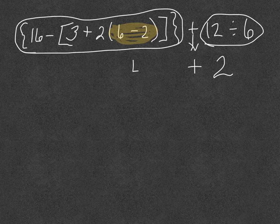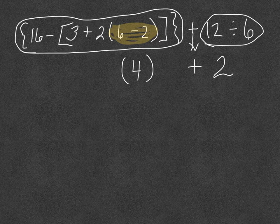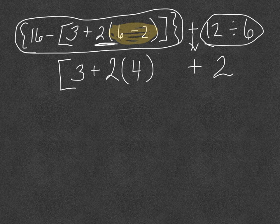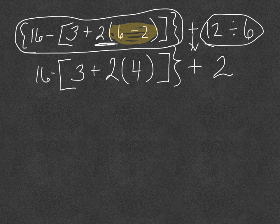So that is 4. I do need to bring my parentheses down because of the 2 right next to it because that means I'm going to multiply. So now I have my bracket and bring everything else down just as it is. And then I have to bring my 16 minus, everything has to come down.